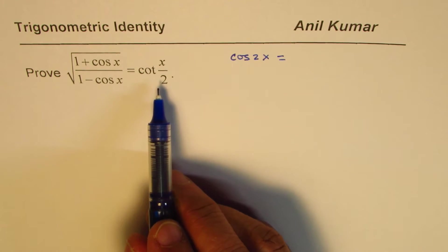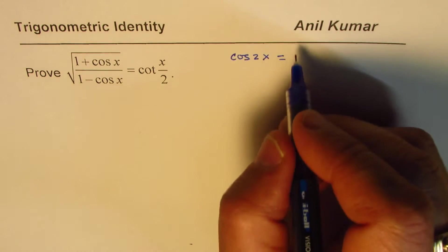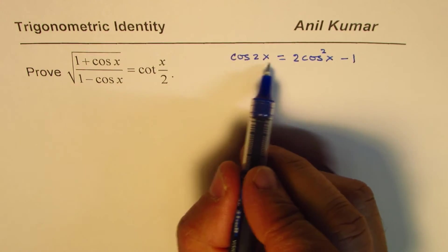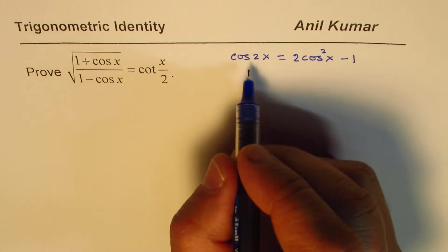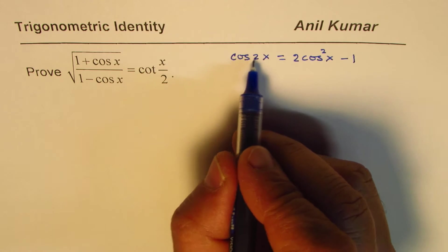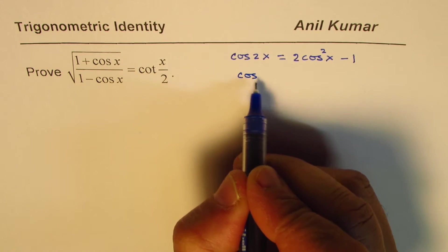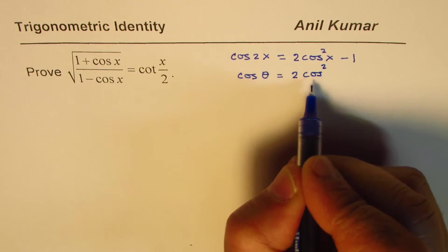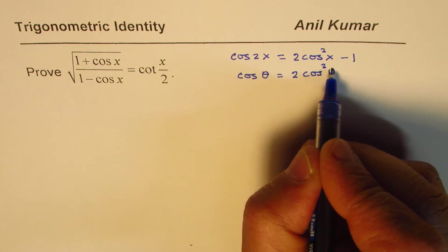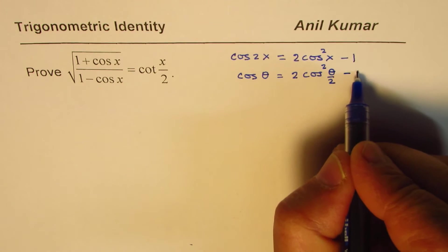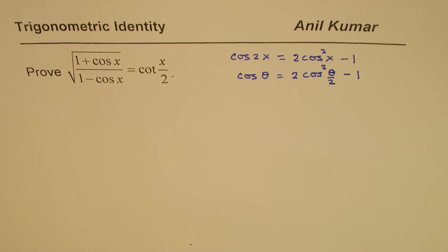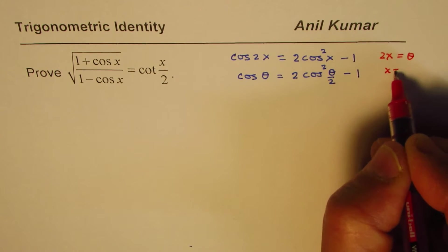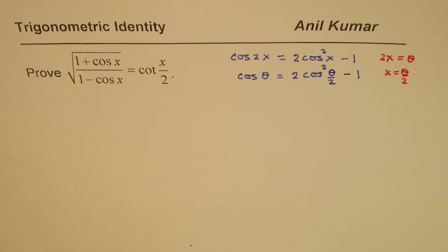Let's see how to get half-angle formulas from what we learned. cos 2x could be written as 2cos²x - 1. Now if I replace the angles by half — substituting theta for 2x, so x becomes theta/2 — I can write cos θ = 2cos²(θ/2) - 1. What I did was replace 2x with θ, so x equals θ/2. θ is any angle, so you can use this freely.